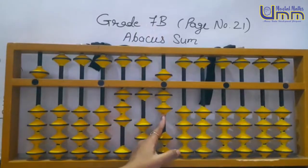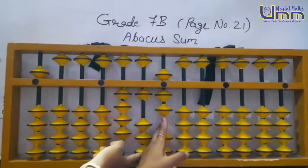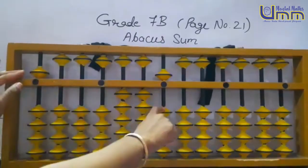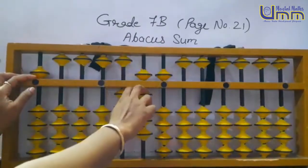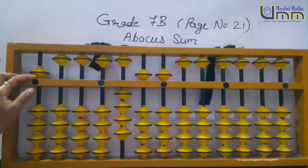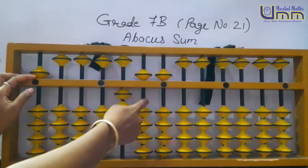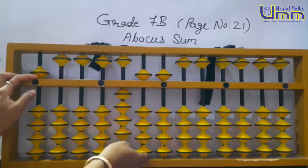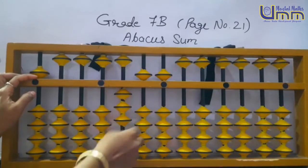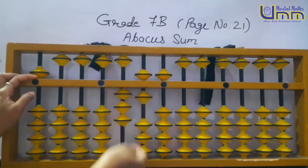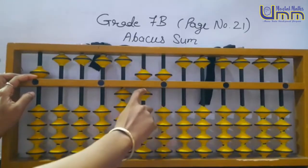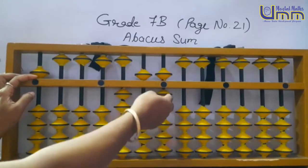11. 138: 1 directly, 3 directly, 8 minus 2 plus 10. Then minus 99: can you do minus 90 directly? No. So for minus 9 ke liye minus 10 plus 1; minus 9: minus 10 plus 1.